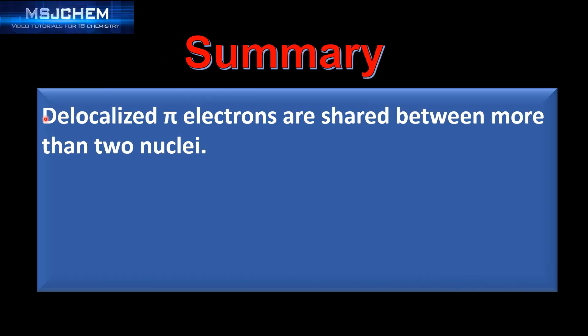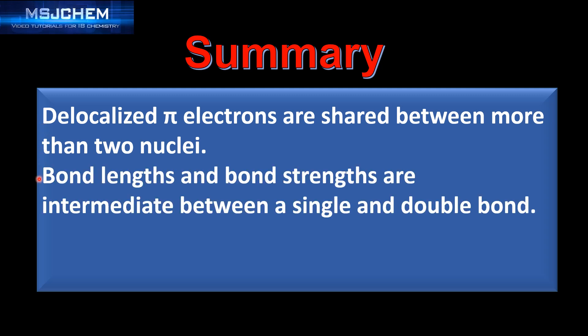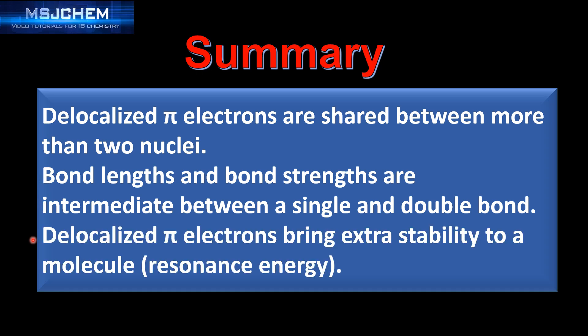To finish with a summary: delocalized pi electrons are shared between more than two nuclei. The bond lengths and bond strengths are intermediate between a single and a double bond. Delocalized pi electrons bring extra stability to a molecule, and that's known as the resonance energy, which is covered in topic 10 organic chemistry.